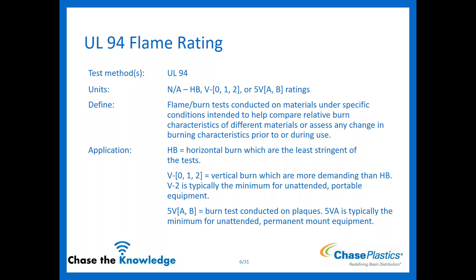What does that look like in application? HB stands for horizontal burn — it's the least stringent of those tests. Then you have your vertical burns: V0, V1, and V2. V2 at a minimum is generally used for unattended portable equipment. Then you have your 5VA and 5VB, conducted on plaques — the most stringent tests. 5VA is typically used at a minimum for unattended permanent mount equipment. I want to make sure we're understanding if there's going to be a requirement for these ahead of time.